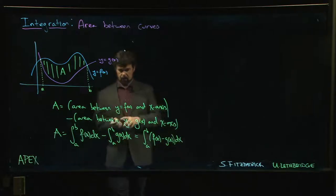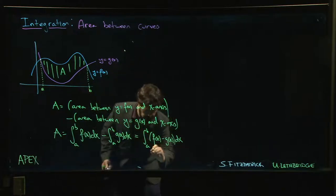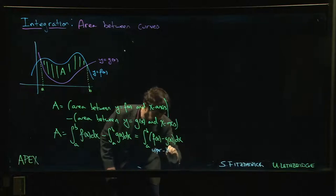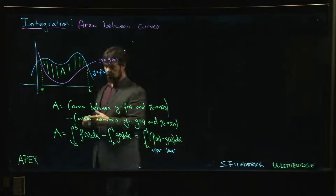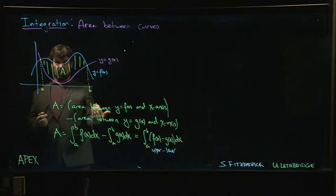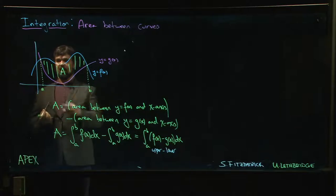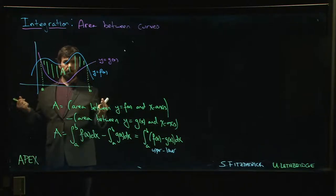The important thing here is that you're always doing the upper curve minus the lower curve when you're doing area between curves. Top minus bottom is going to give you the area between the curves. Now I've drawn it so that the curves actually intersect and we have this clearly defined area. In some problems maybe you